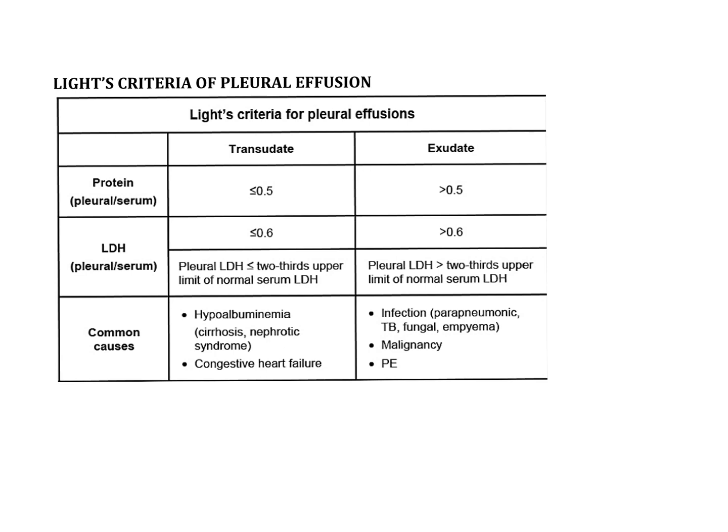In transudate, the fluid is transparent, and in exudate, the fluid is milky, suggestive of inflammation. Inflammation means WBCs, antibodies, and other cytokines — these are proteins. So in transudate there will be less protein, and in exudate there will be increased protein. We compare the protein in pleural fluid and in the serum.